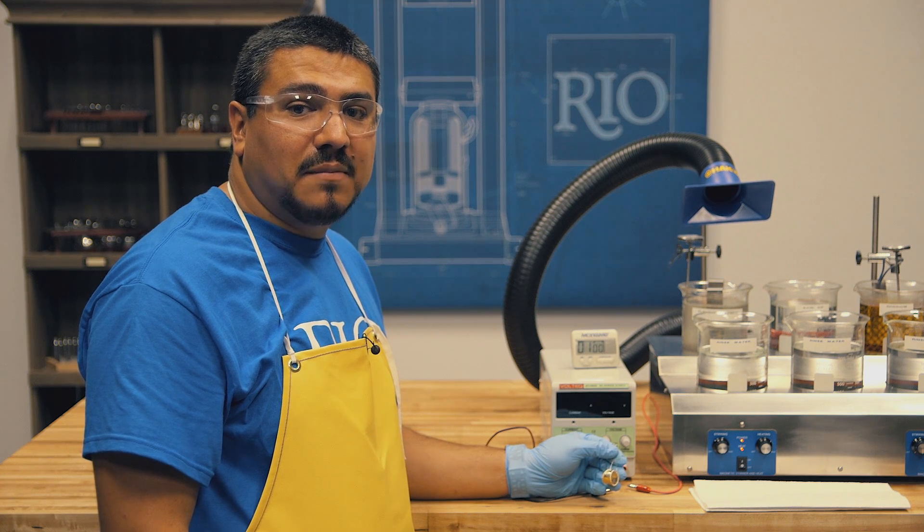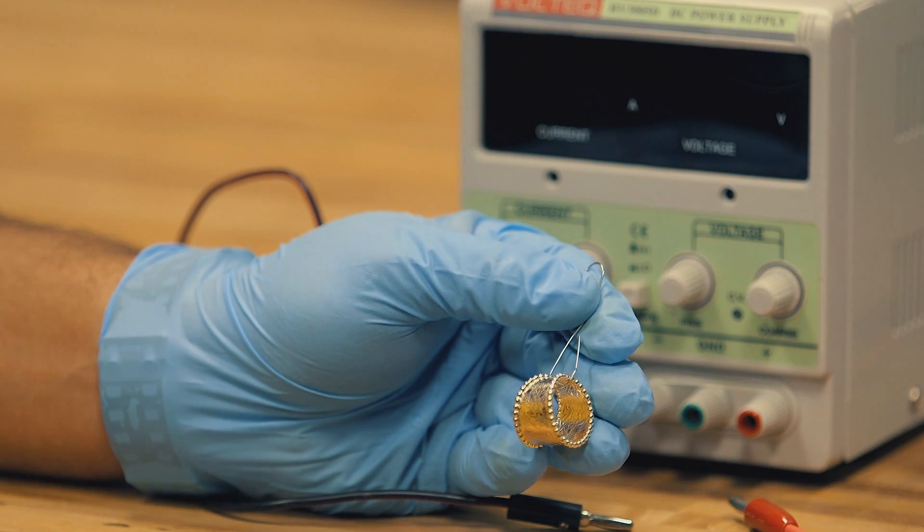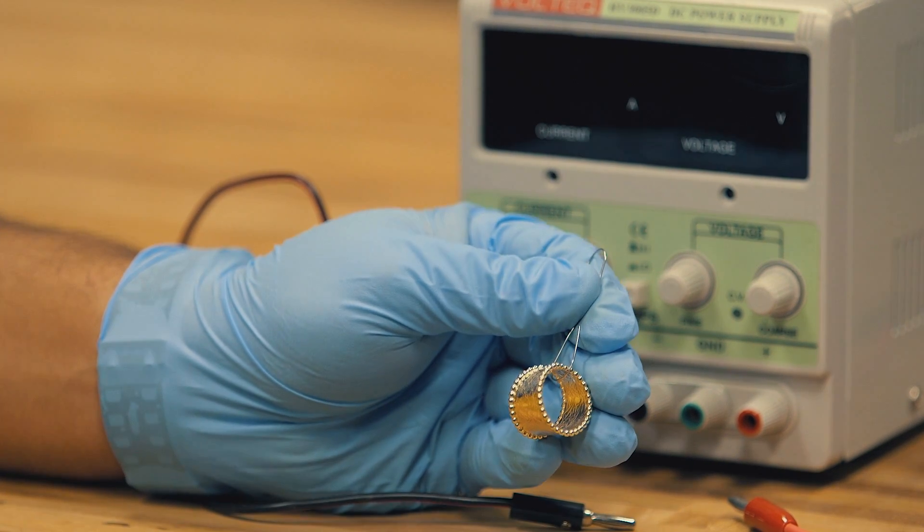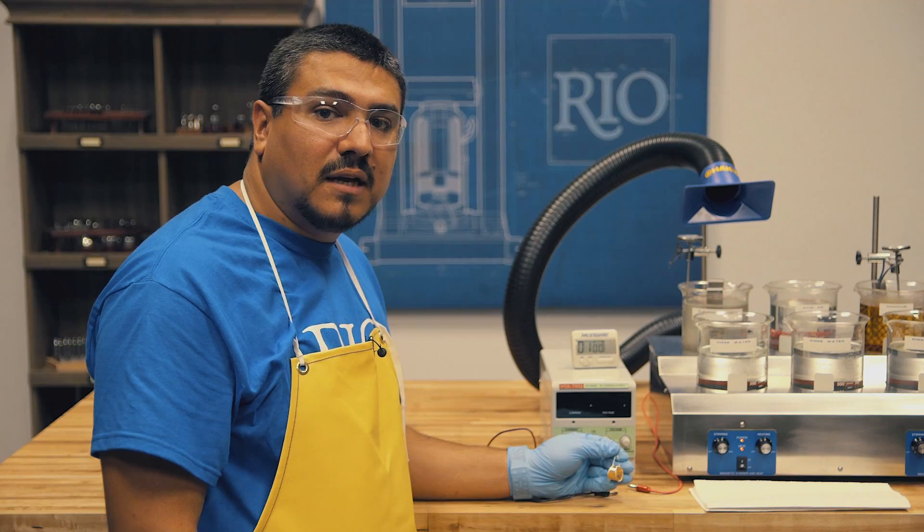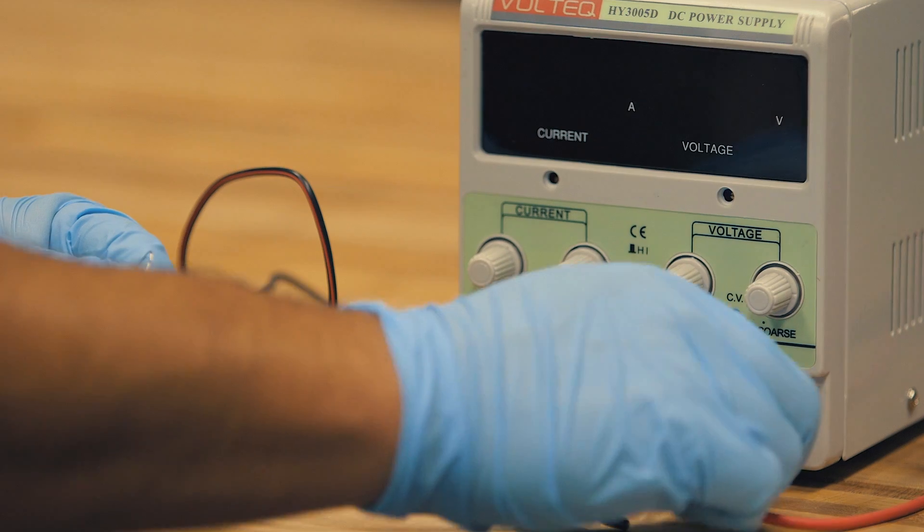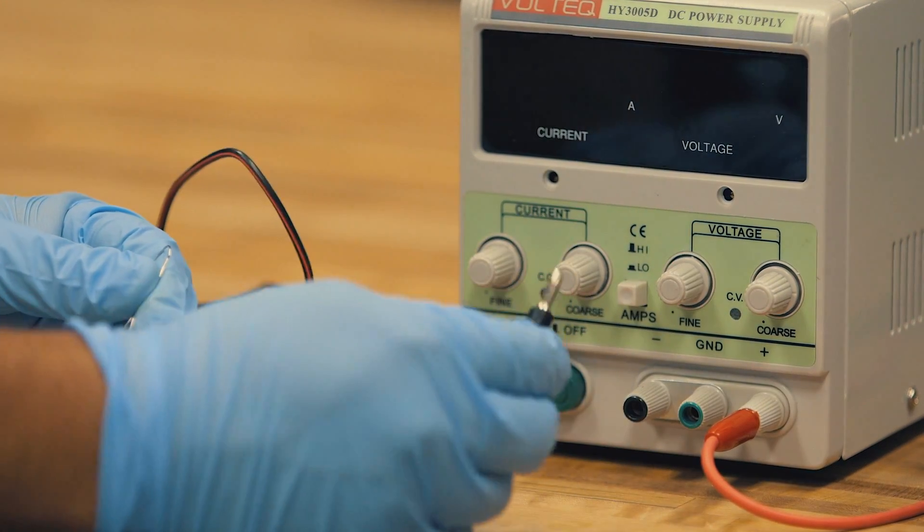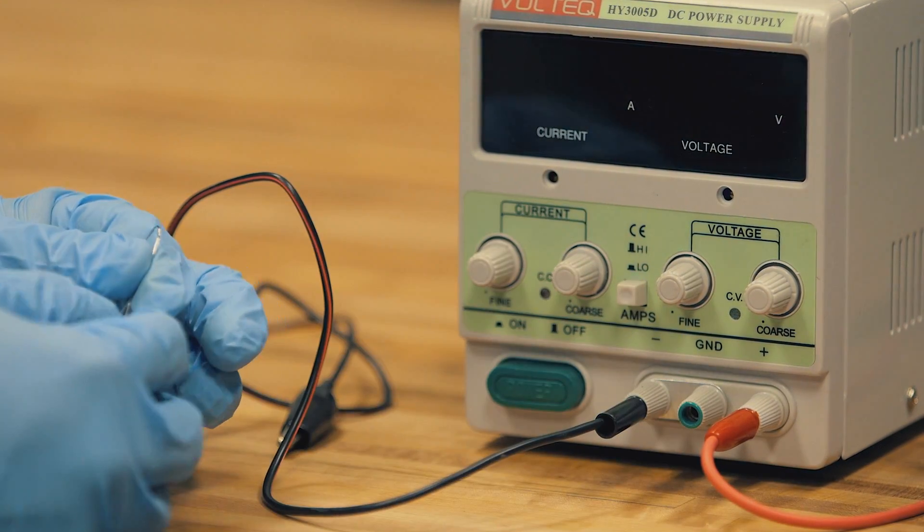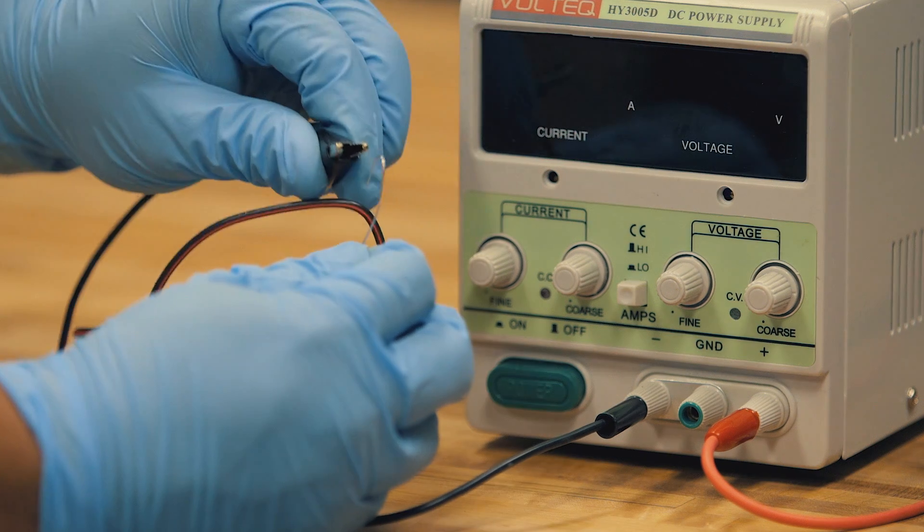Now that the solutions are set up, I've fixtured our piece with stainless steel handling wire. This will suspend our piece under solution. Now I'm going to set the rectifier and connect the positive and negative leads to our stainless steel handling wire.